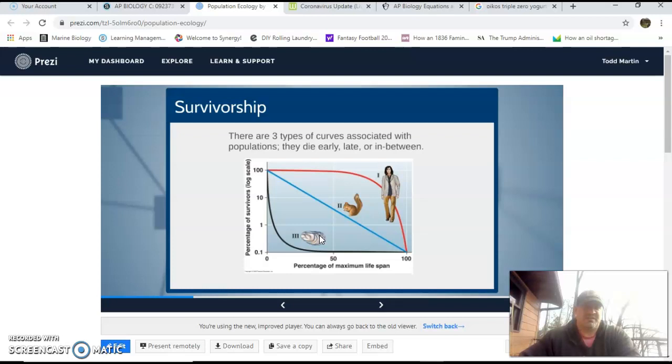Now mosquitoes have tons and tons of offspring. Not all of them will make it. In fact, very few will make it. If you really think about it, and you're going to be tempted to say a different answer here in a second, but sea turtles have a ton of offspring compared to how many actually make it. So when you have a ton that don't make it, they're called a level three survivorship curve.